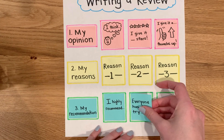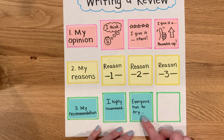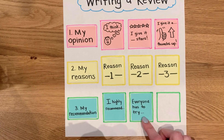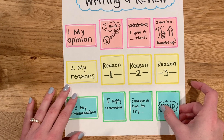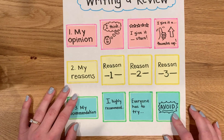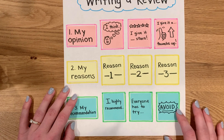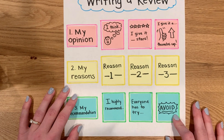You can say things like, "Everyone has to try the pizza at my favorite pizza shop — it is so good, everyone has to try it." Or you can say something like, "Avoid this restaurant, it's not very good." You can even talk about things to avoid in a restaurant you like: "I really love my local restaurant, but you should avoid the pasta dish — it's not very good."